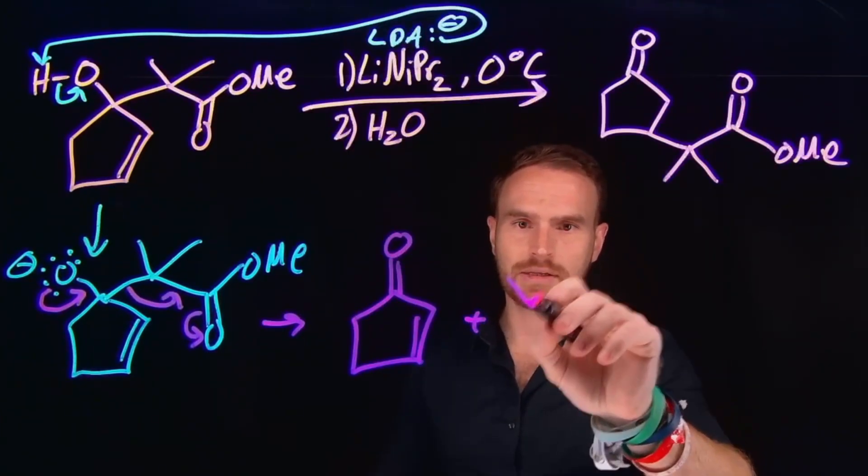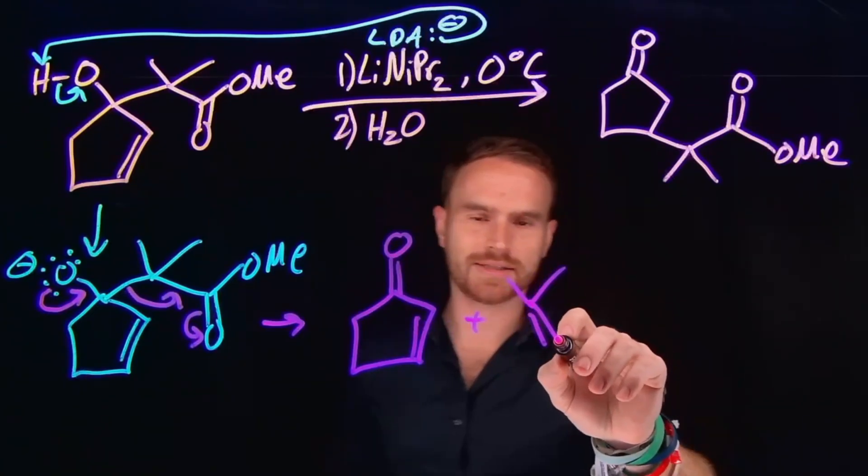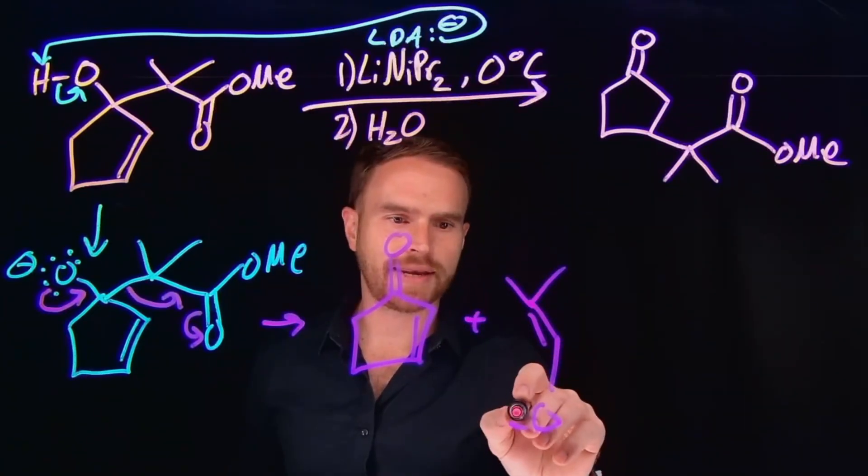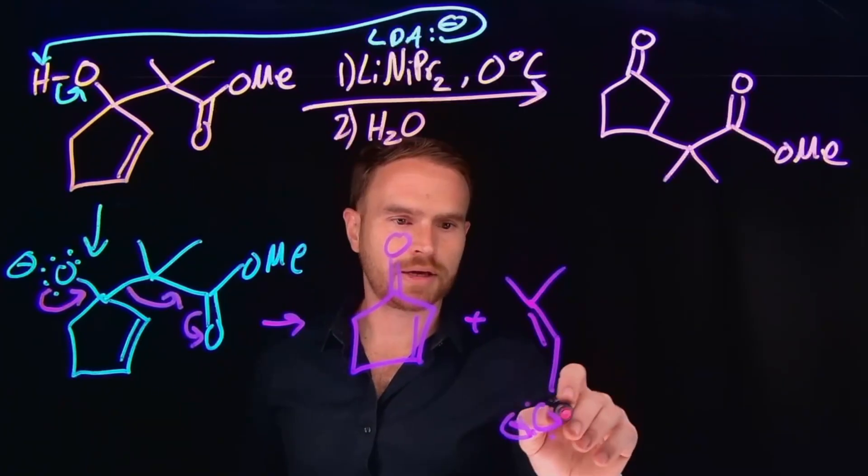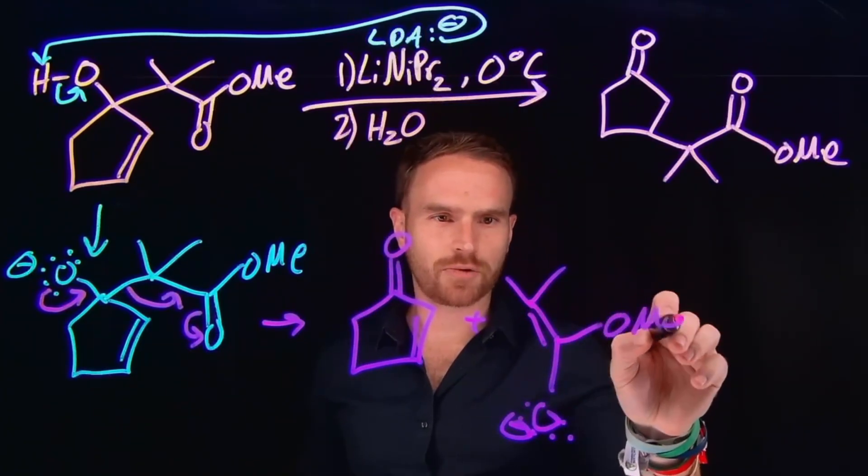So this is going to be these two carbons located here. And then now we have formed our enolate species at this position where we have formed a negatively charged oxygen because these pi electrons came over to oxygen. And then we still have this methoxy group located here.